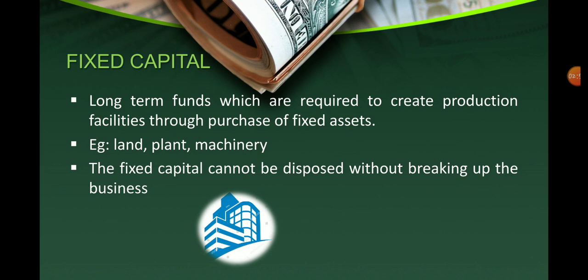Examples of fixed capital are land, capital, and machinery. Fixed capital cannot be disposed of without breaking up the business, which means that fixed capital cannot be zero whenever there is a business activity. A business can only be started with fixed capital, and only when a business shuts down will the fixed capital fall to zero. These are the three important features of fixed capital.